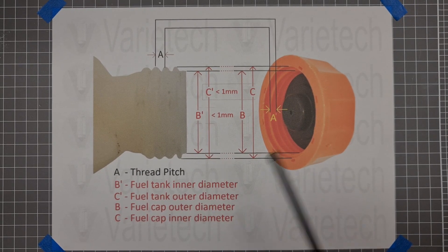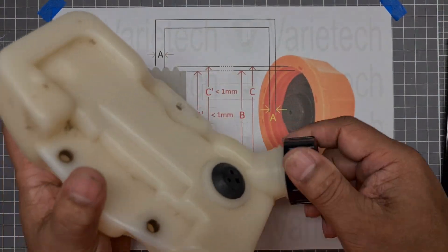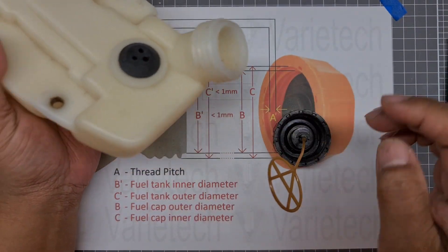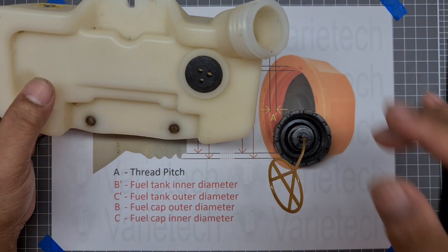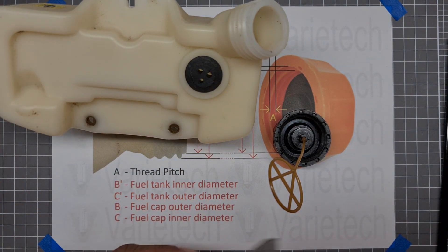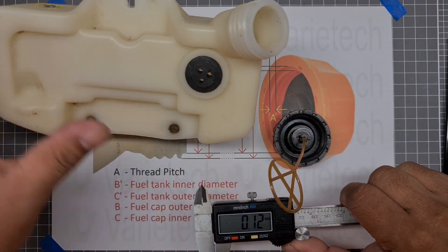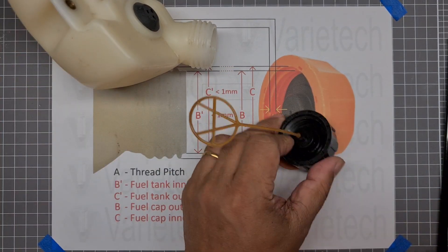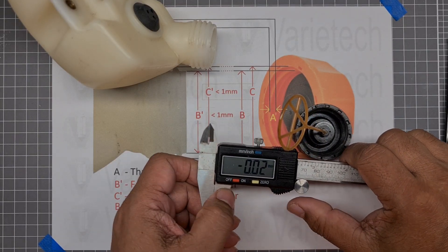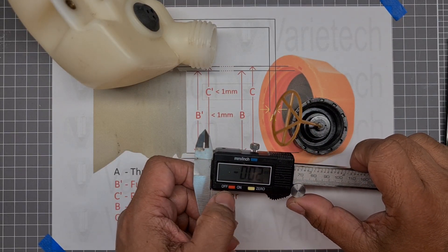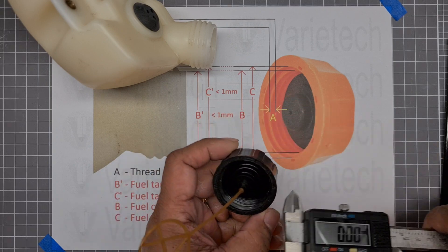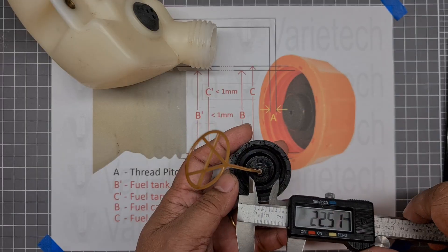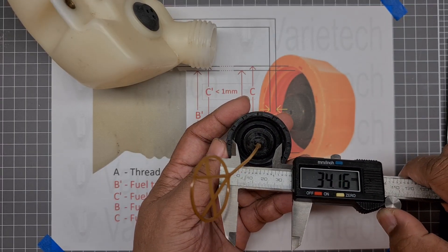Okay, so we have here the actual fuel cap and also the fuel tank. So I have the vernier caliper, so I'm going to measure. So we have this fuel cap here, so we have to zero this one first. Okay, so now if I measure the inner diameter of the fuel cap, which is from here to here...